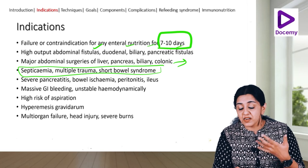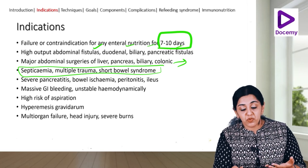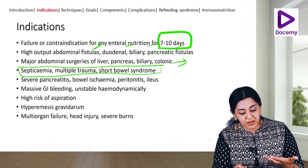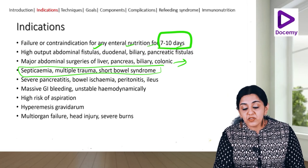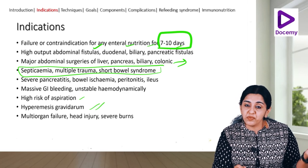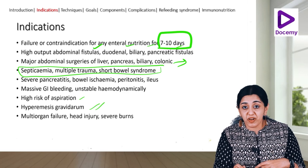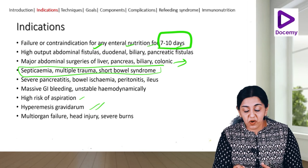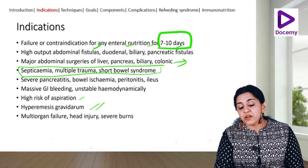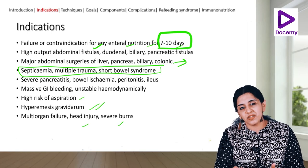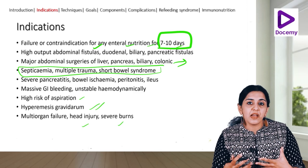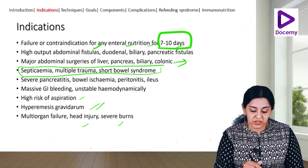Other indications include massive GI bleeding with hemodynamic instability - as feeding can increase the bleed - high risk of aspiration, hyperemesis gravidarum where rapid nourishment is needed, and where enteral nutrition alone is not sufficient. Multi-organ failure, head injury, and severe burns are also conditions where the patient may not be able to undergo any enteral nutrition.